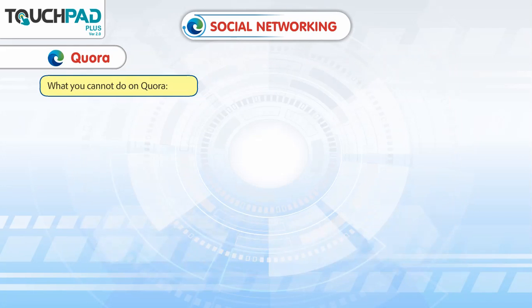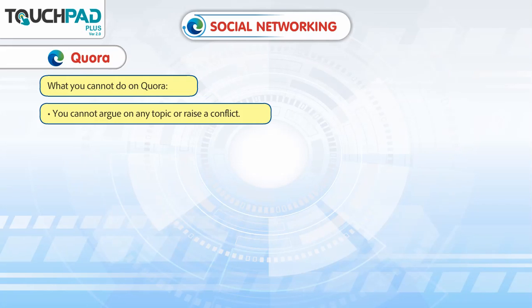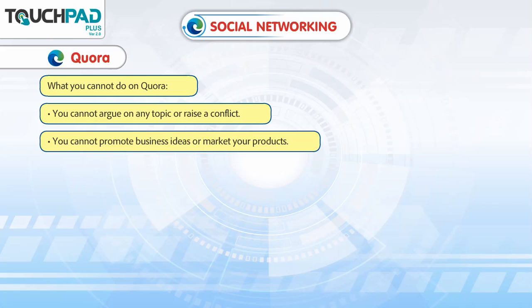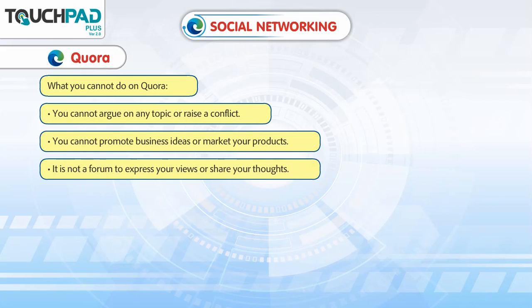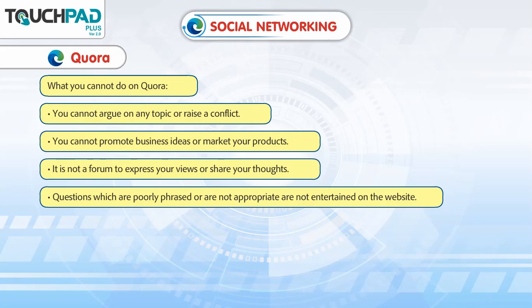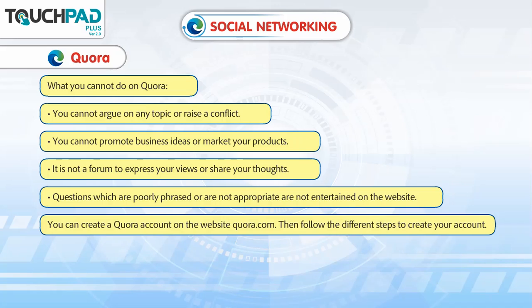What you cannot do on Quora: You cannot argue on any topic or raise a conflict. You cannot promote business ideas or market your products. It is not a forum to express your views or share your thoughts. Questions which are poorly phrased or not appropriate are not entertained on the website. You can create a Quora account on the website Quora.com and follow the steps to create your account.